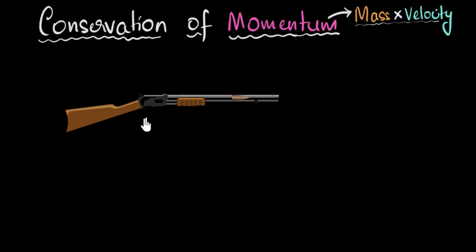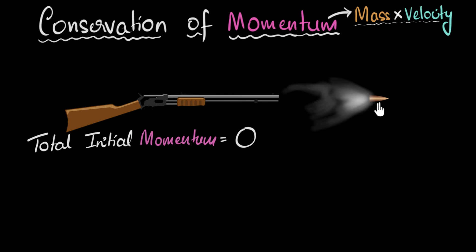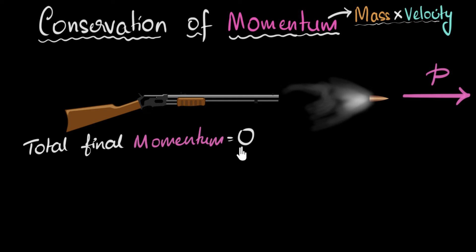Take this rifle for an example. Not to encourage violence, but it's a good example of this principle. Now before firing the bullet, both the bullet and the gun are at rest. So the total initial momentum is zero. Now what happens after firing the bullet? Well once you fire the bullet, the bullet gains a forward momentum. But the conservation principle says, if the initial total was zero, even the total final momentum should also be zero.